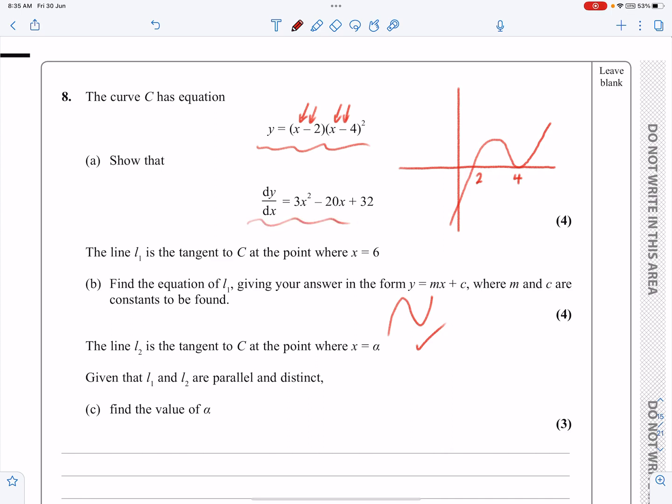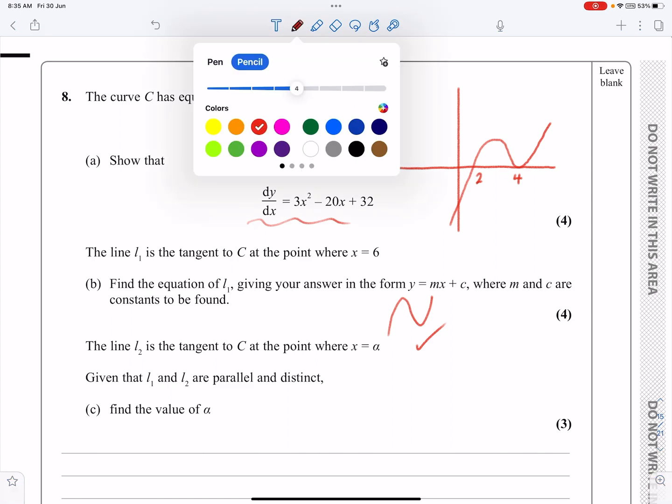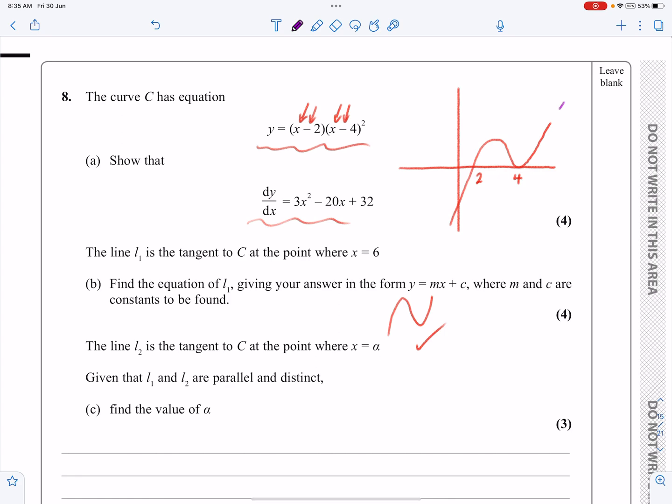They're going to ask me to differentiate, I'll be able to do that in a second. And then they're going to say we've got the equation of a tangent at x equals 6, which is going to look something like that, and that's L1. And they're going to tell me that L2 is an equation to a tangent where L1 and L2 are parallel, which means I'm going to get somewhere over there another line. This will be L1 and this will be L2.